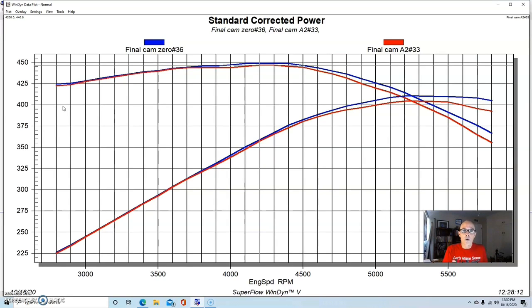Now between those two extremes, there are the areas where if you add duration, we pick up power at the top, we lose a little at the bottom. That typically happens. Same thing happens with cam timing. If we advance it, typically we tend to pick up power at the bottom and lose power at the top, and the reverse happens if we retard the cam.